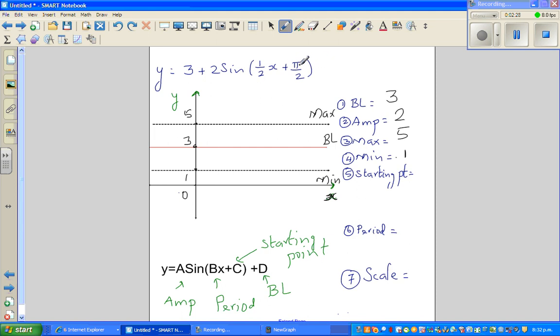Let me first change this into degrees. Pi by 2 is in radians, so pi by 2 is 90. I'll write this in terms of degrees: that's 3 plus 2 sin(half x plus 90). Now to decide the starting point, you have to set this whole thing equal to zero. If you know the graph of y equals sin x, your sine graph starts at 0, 0.